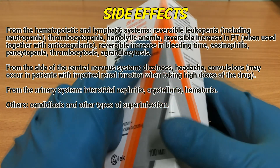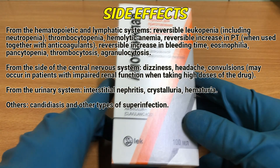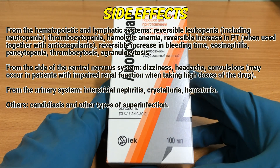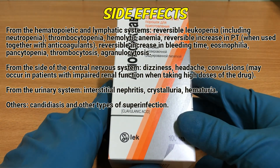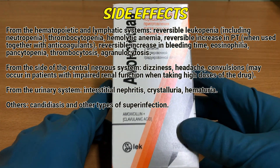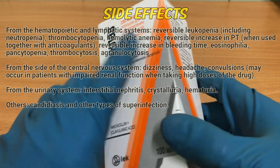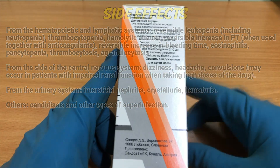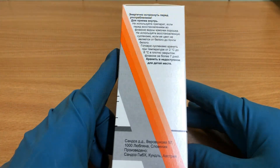From the urinary system: interstitial nephritis, crystalluria, hematuria. Other: candidiasis and other types of superinfection.